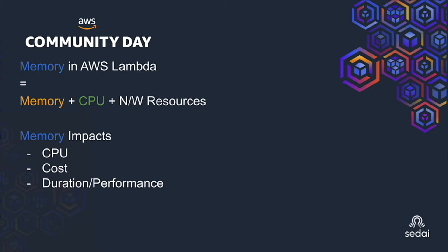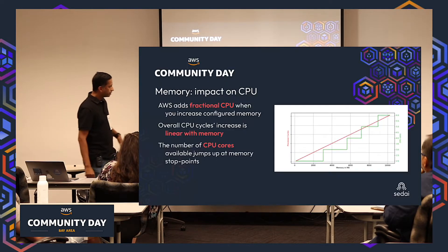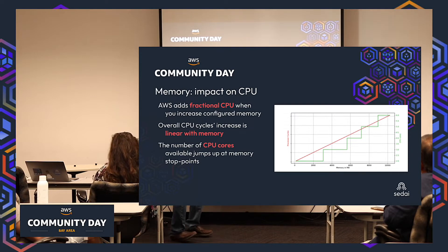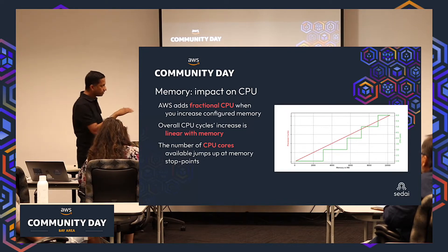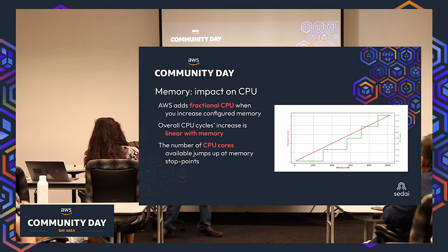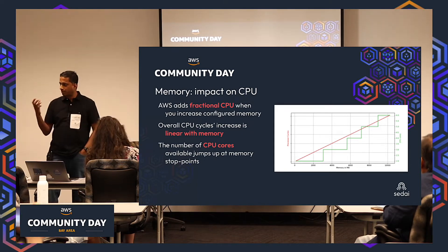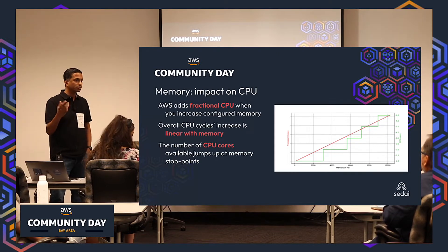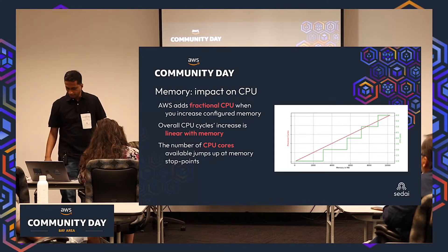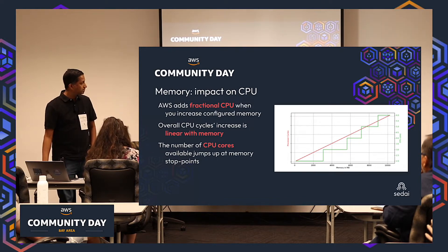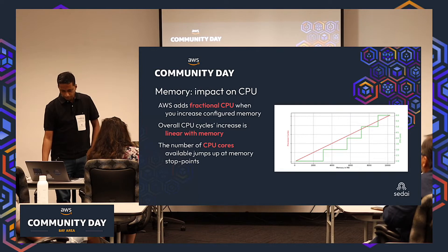When you increase memory linearly, CPU also increases in steps. At 128 MB you get roughly 0.5 millicores; at 250 MB you get about one core; at 512 MB you get about two cores. So AWS adds fractional CPU at certain intervals, and it's linear with memory.